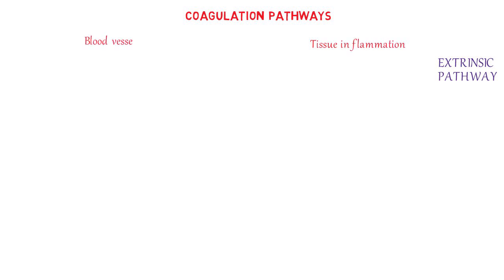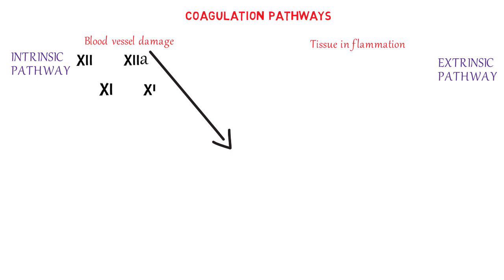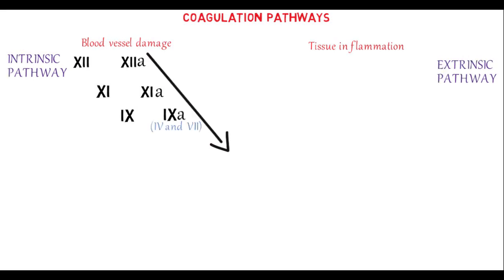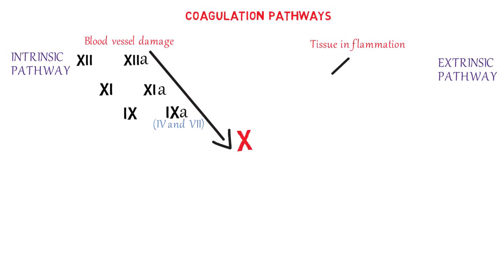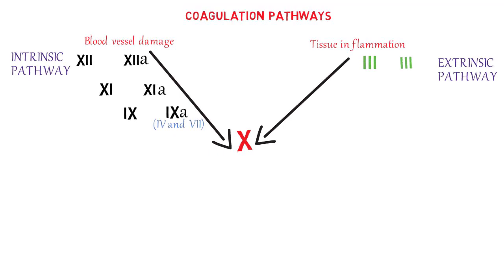The extrinsic pathway comes into play when there is inflammation, while the intrinsic pathway is activated as a result of damage to the blood vessels. The intrinsic pathway starts with the activation of factor 12. Factor 12 activates factor 11, and factor 11 activates factor 9. Factor 9, in the presence of cofactors calcium and factor 8, activates factor 10. The extrinsic pathway is triggered by tissue inflammation — factor 3 (tissue factor) activates factor 7, and factor 7 then activates factor 10.